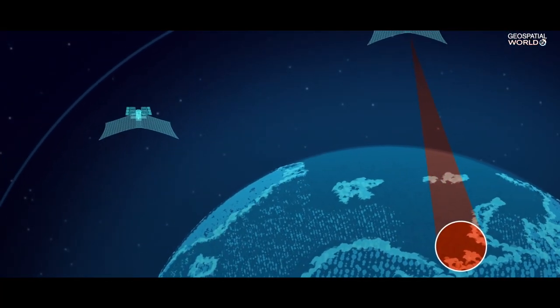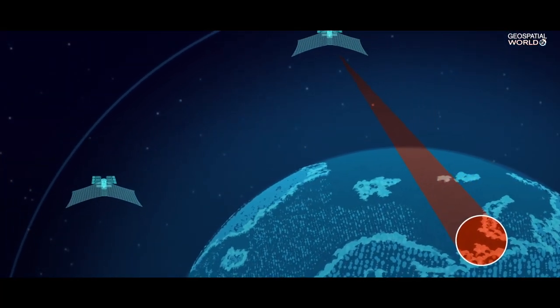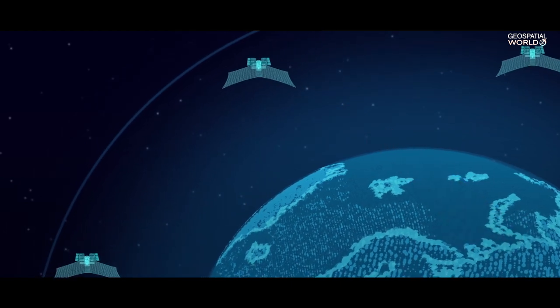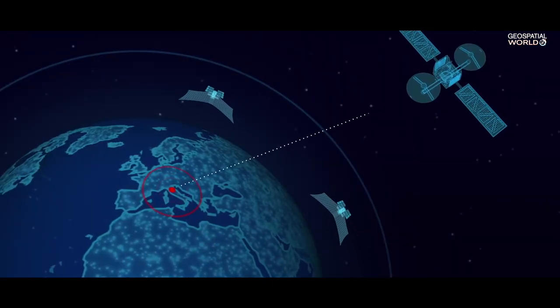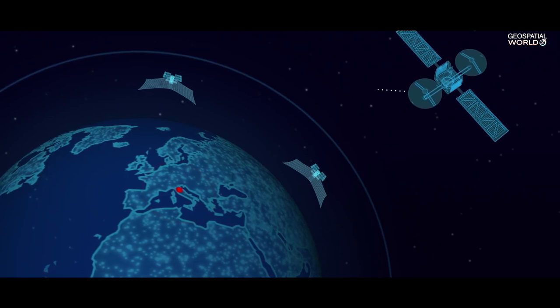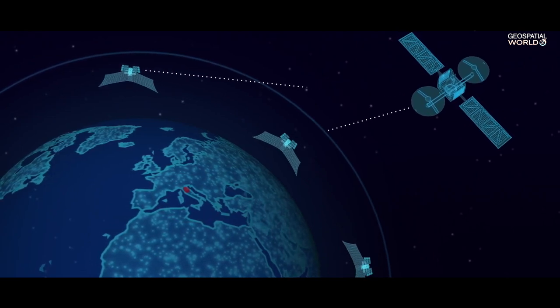Unlike optical satellites, SAR satellites use their own energy — shooting out different types of radar bands. That energy reflects off the surface of the earth and is returned back to the satellite.